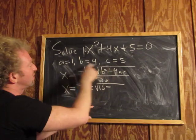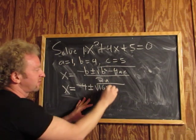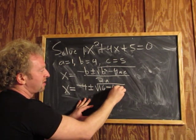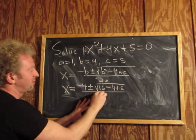and then 4ac, so 4 times 1 times 5. All over 2a, so 2 times 1.